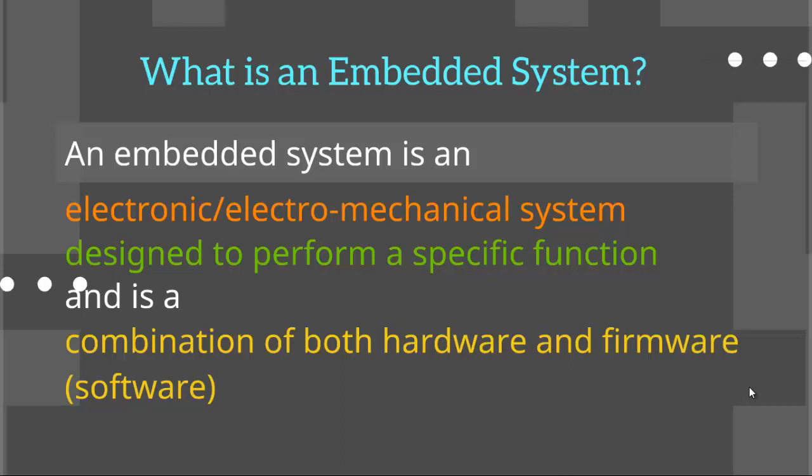Unlike general computing systems, embedded systems are designed to meet a specific need. It is tailored around that need, which makes choosing the right hardware and software very important. We'll talk about this aspect as we go deeper into the course at a later time.